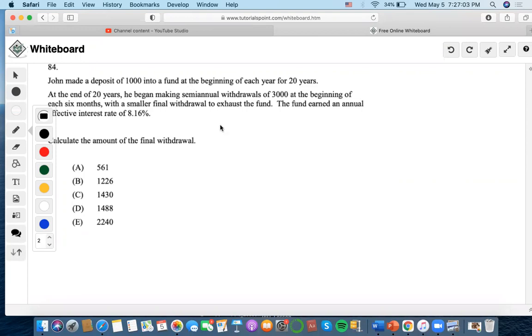So John made a deposit of $1,000 into a fund. A fund is a future value concept, right? So we're going to set it as that's at the beginning of each year for 20 years.